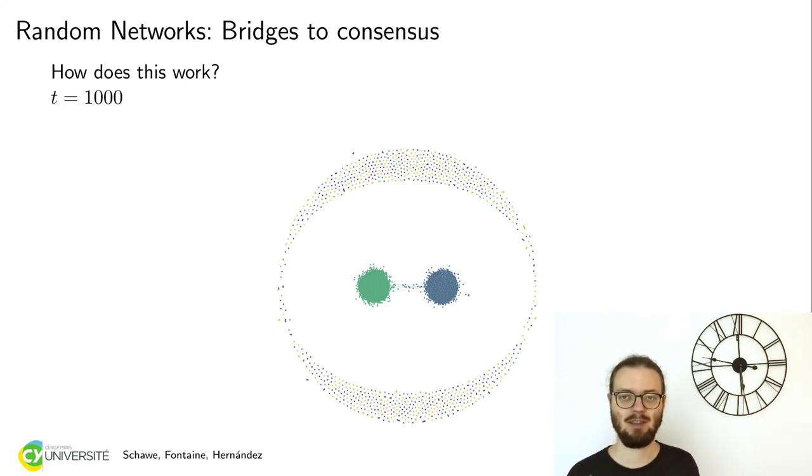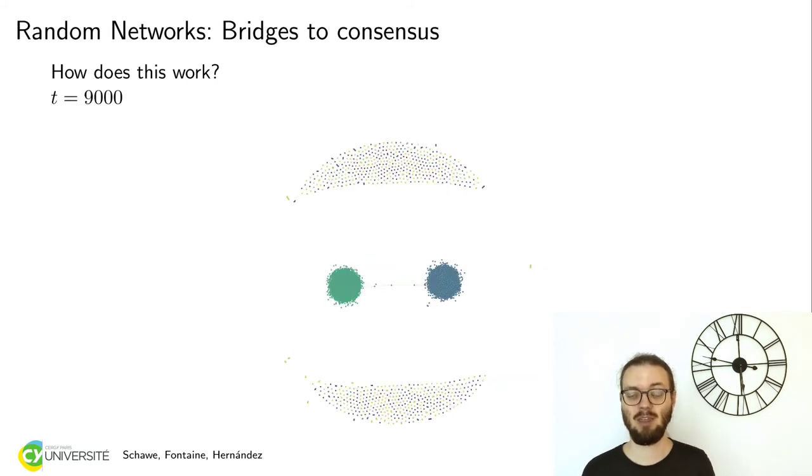If we let it evolve here after a thousand iterations of the dynamical rule, it persists. So the bridge in between the two blobs stays there. If you look closely, you might notice that the color changes. Actually what happens is, all the agents in those two blobs get closer together in opinion, mediated by the few agents in the bridges.